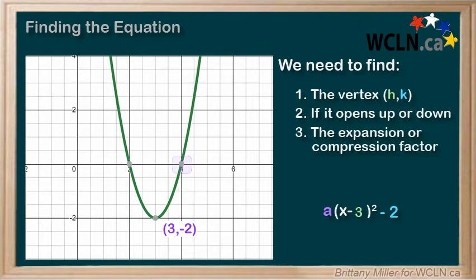Well, in the mystery parabola, we can see that we've gone over 1 and up 2 instead of 1. This means our a value is 2.